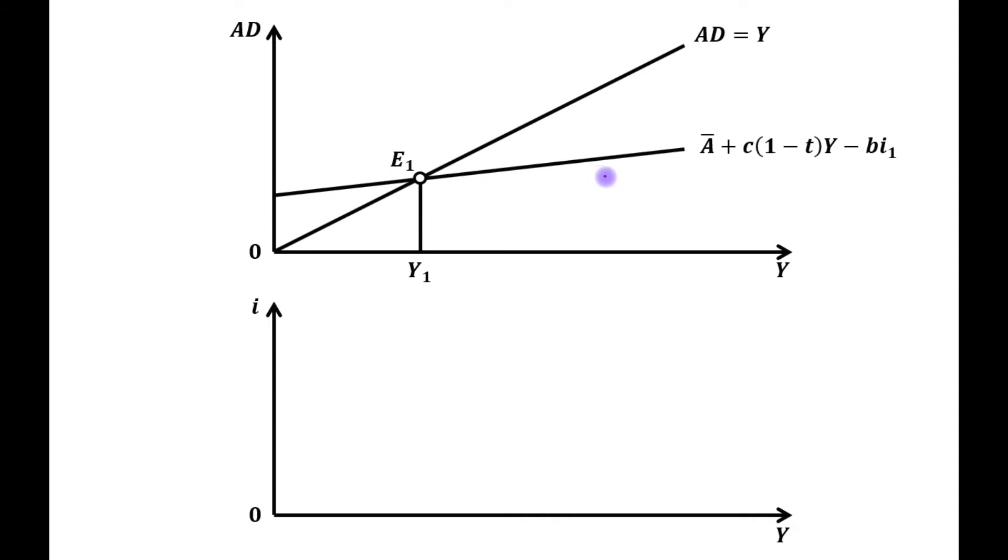This is the initial AD curve and this is 45 degree line. Initial equilibrium point and equilibrium level of output is OY1. We have shown these combinations in the lower panel as OY1 is the equilibrium level of output at interest rate OI1, and this is the initial IS curve.